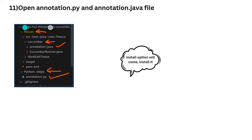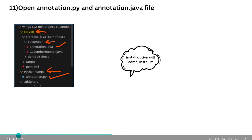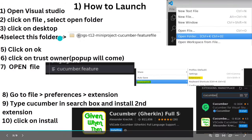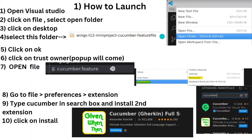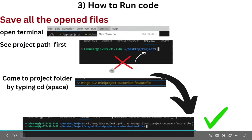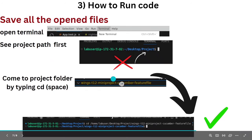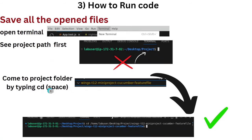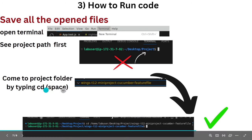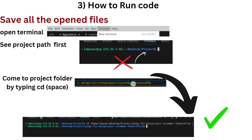You need to navigate to the correct project folder in the terminal. Type 'cd' followed by a space, then the project folder path. You can right-click the project folder in VS Code, copy the path, and paste it after 'cd'. For example: cd wings12-mini-project. Press Enter to navigate there.